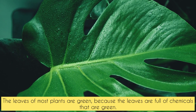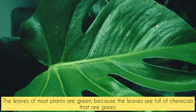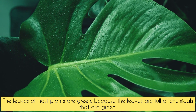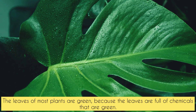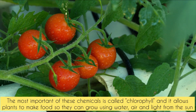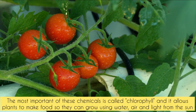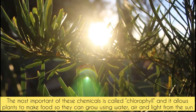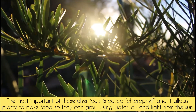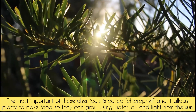The leaves of most plants are green because the leaves are full of chemicals that are green. The most important of these chemicals is called chlorophyll, and it allows plants to make food so they can grow using water, air,